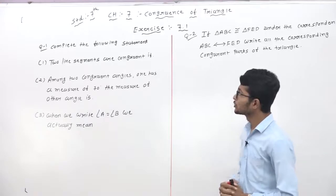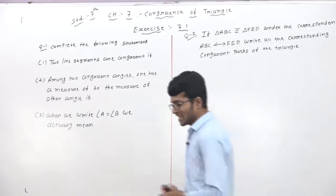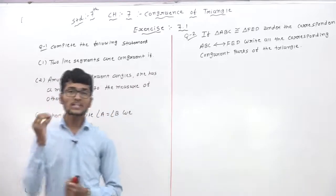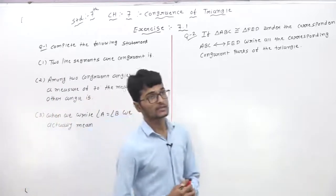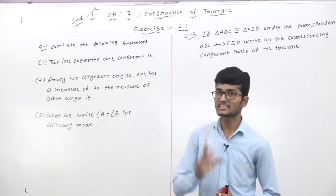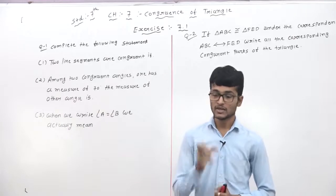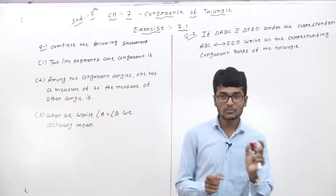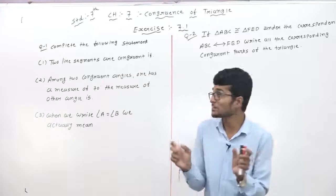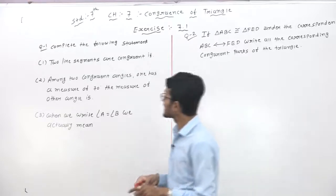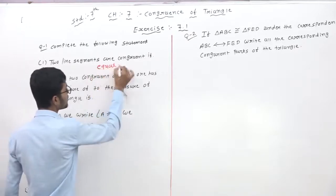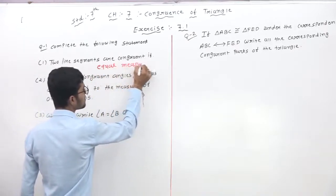In the first one: two line segments are congruent if... Two line segments are congruent when they have the same measurement, equal measurement. Suppose one line segment measures 5 and the second line segment also measures 5, then these two line segments are congruent. So our answer is equal measure, equal measurement.